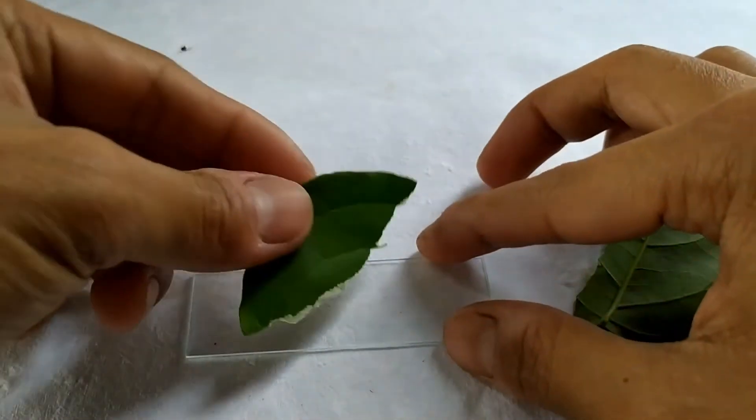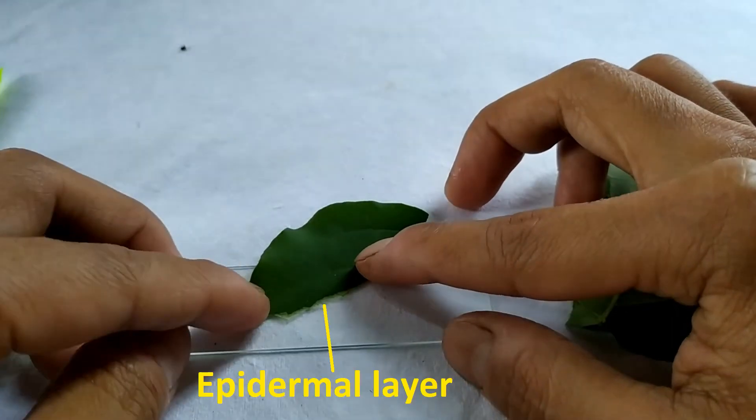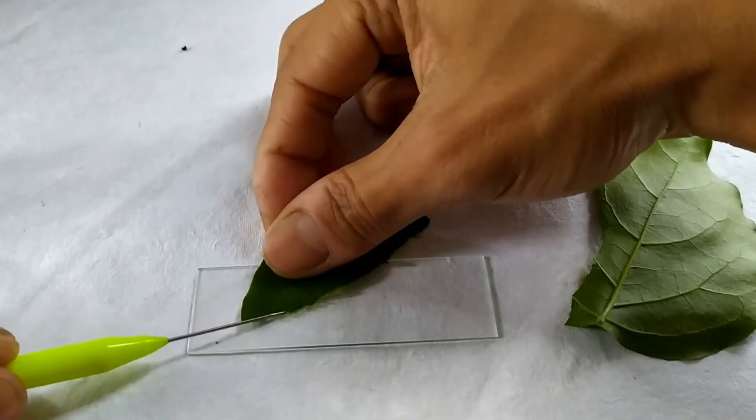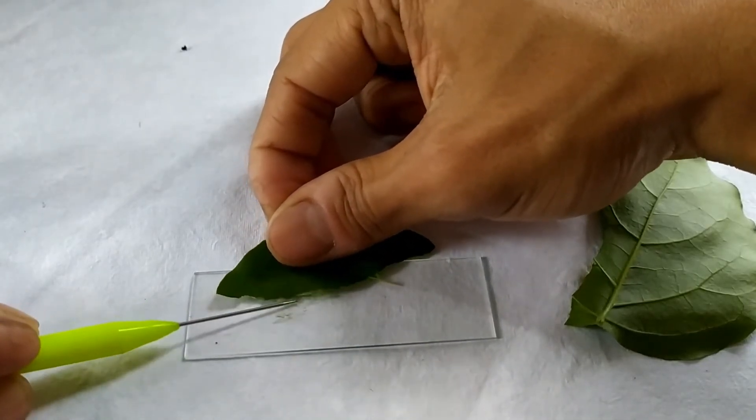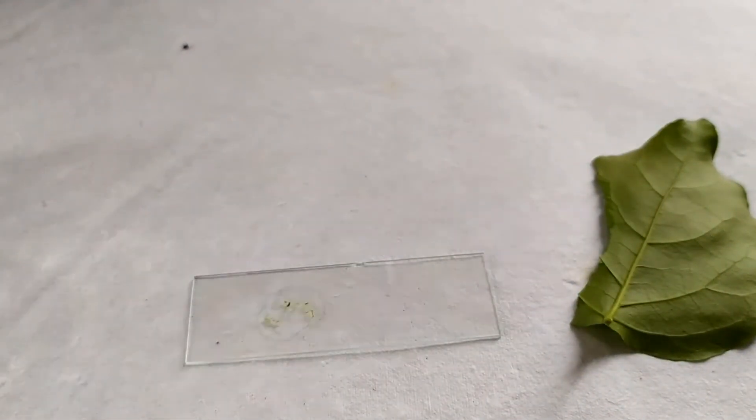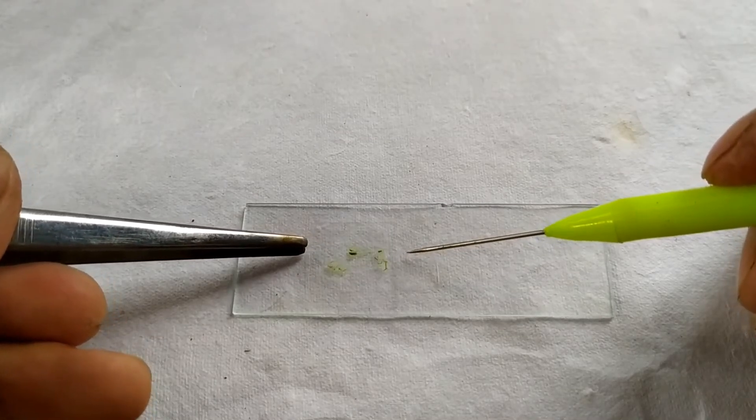If this maneuver has been performed correctly, you'll observe a thin layer of epidermis detaching from the leaf surface as you continue to pull. Immediately detach a fragment of the epidermis using a tweezer and place it on a glass slide containing a drop of water or a staining dye.